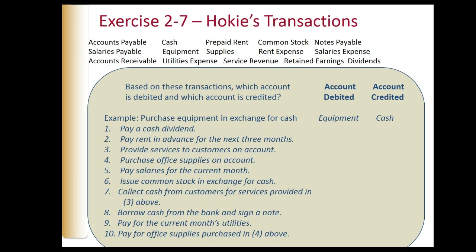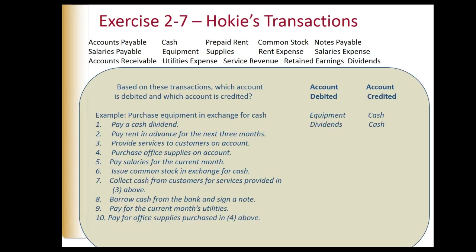Transaction one: purchase equipment in exchange for cash. Equipment increases — we debit equipment, which is an asset. Cash is being reduced — we credit cash. Next, we pay a cash dividend. Cash decreases, so we credit cash. Dividends increase, so we debit dividends.